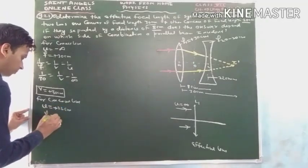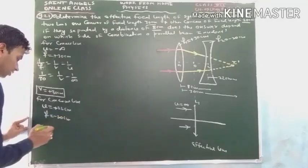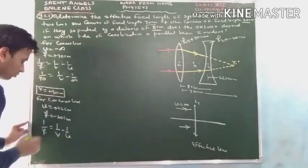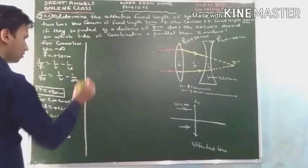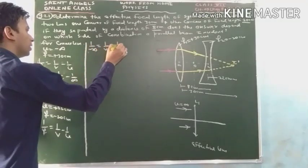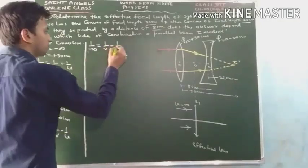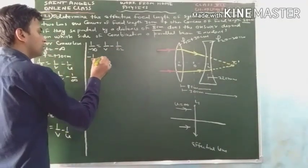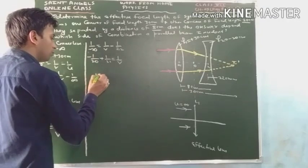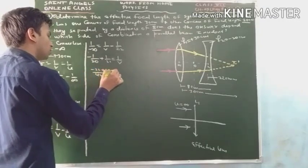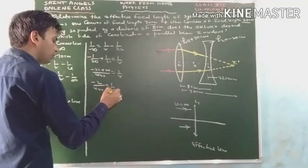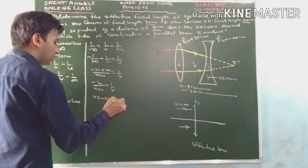For the concave lens: f = −20 cm, u = +22 cm. Applying the lens formula, 1/f = 1/v − 1/u: 1/(−20) = 1/v − 1/22. Solving: 1/v = −1/20 + 1/22. Taking LCM of 440: 1/v = (−22 + 20)/440 = −2/440. Therefore v = −220 cm.